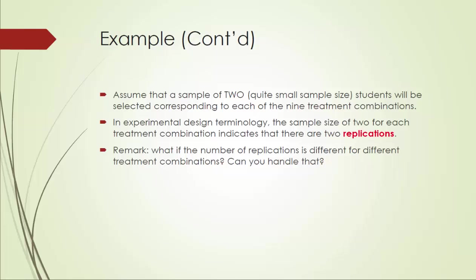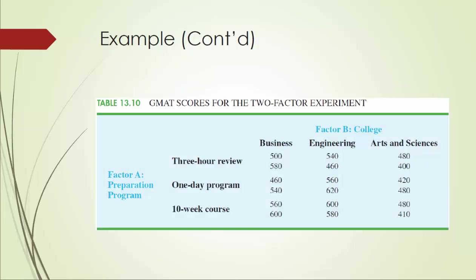Let's take a look at the data of this experiment. Two students are randomly selected from Business who went through the three-hour review, and their GMAT scores are 500 and 580 respectively. Similarly, two students are randomly selected from the College of Engineering who went through the one-day program, and their GMAT scores are 560 and 620 respectively.